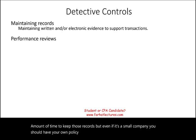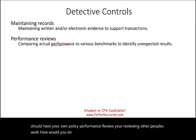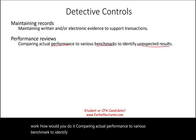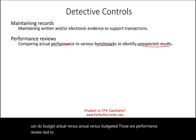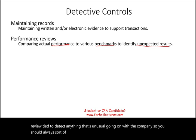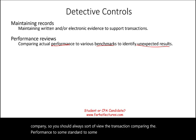Performance review is another detective control — you're reviewing other people's work by comparing actual performance to various benchmarks to identify any unexpected results. You can do variance analysis or actual-versus-budgeted comparisons. These are performance reviews designed to detect anything unusual going on with the company, so you should always review transactions by comparing performance to some standard or benchmark.